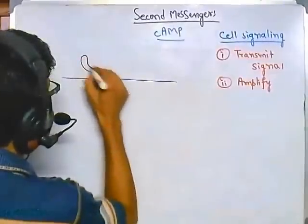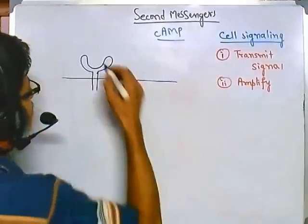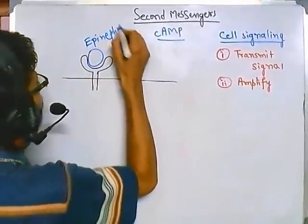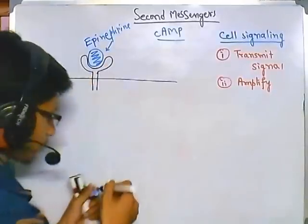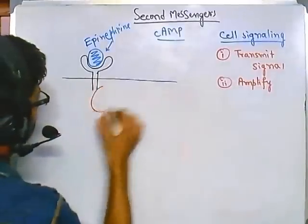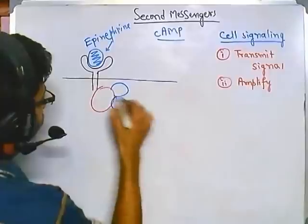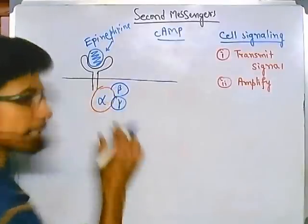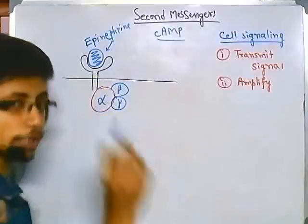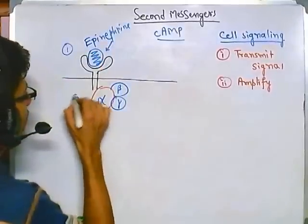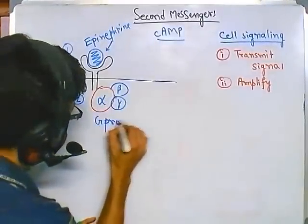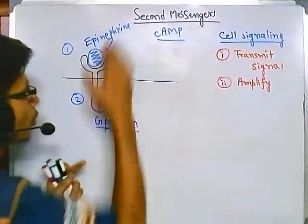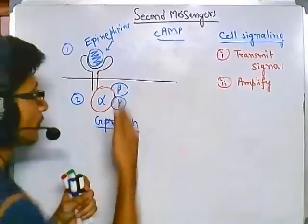In the cyclic AMP system, on the cell surface there is a hormone receptor — let's say it's a receptor for epinephrine. Epinephrine comes and binds with this hormone receptor. Once bound, it activates G protein. G protein consists of three subunits: alpha, beta, and gamma. The alpha part is larger; beta and gamma are smaller. The alpha subunit then separates from beta and gamma.